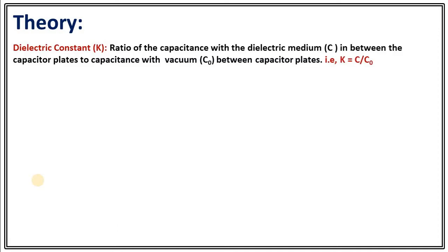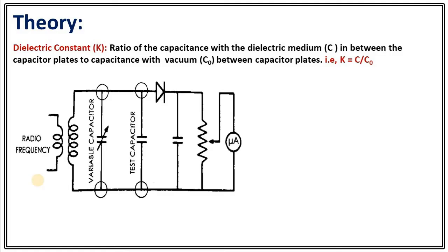The theory of this experiment uses the definition of dielectric constant: k equals C upon C naught. We need to measure the capacitance of a capacitor with a dielectric medium in it, and without the medium. To do that, we will use the dielectric constant measurement setup, which consists of a specific circuit.